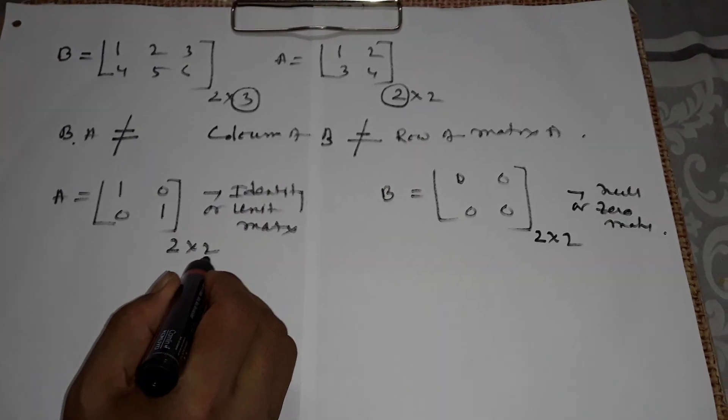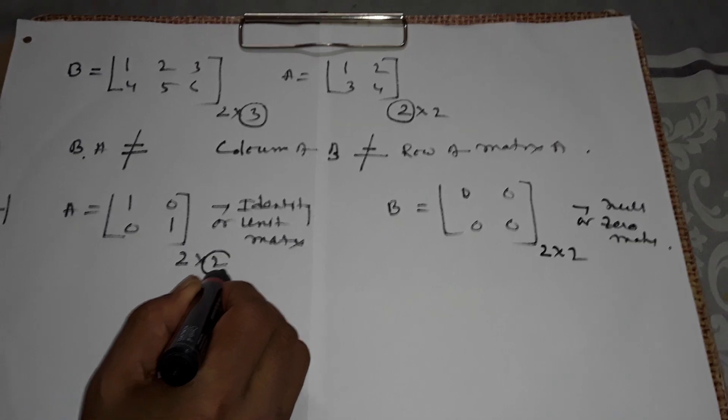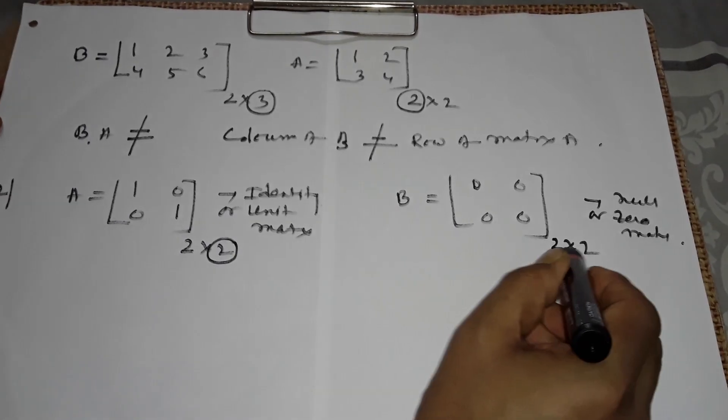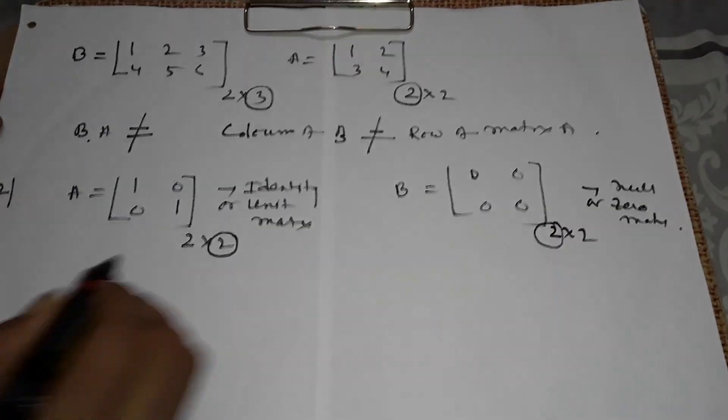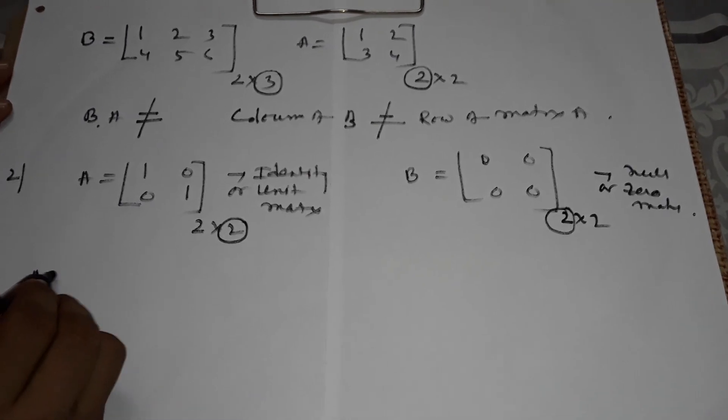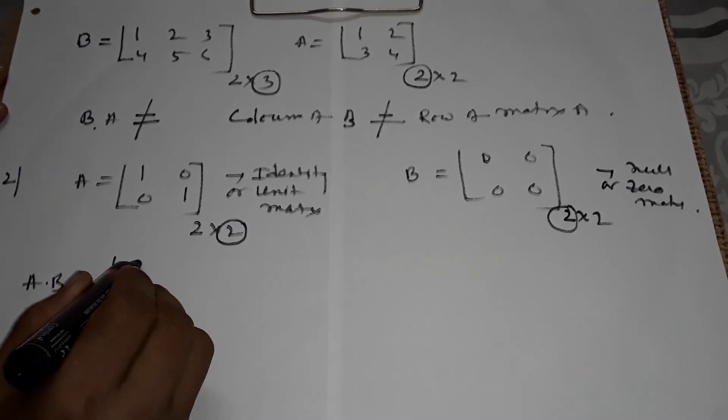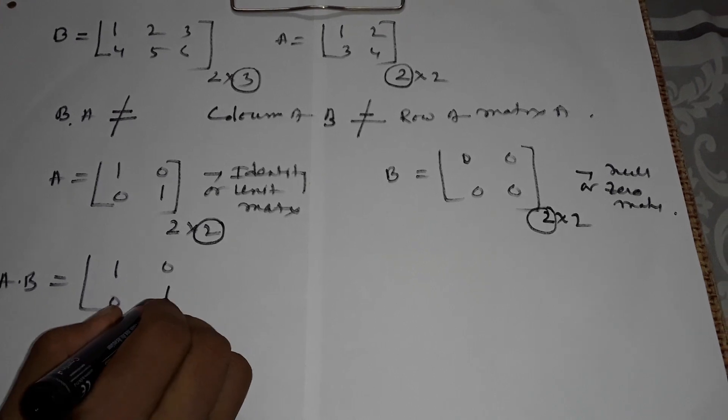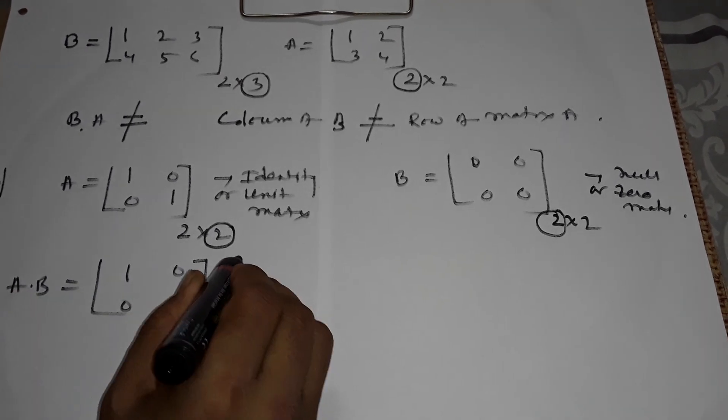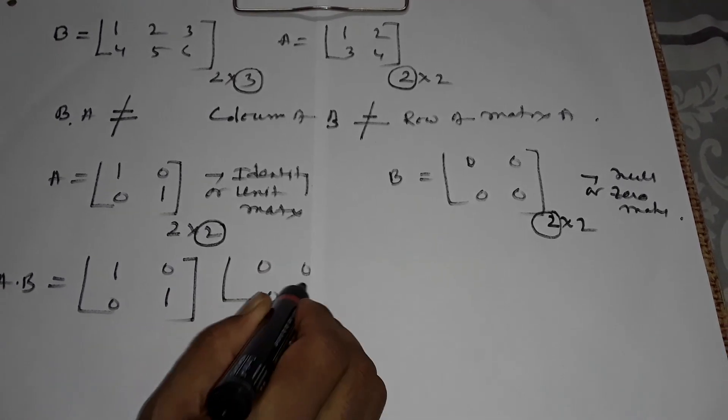Here we can find A and B because the column of A is equal to the row of B. Then we can find A and B equals 1, 0, 0, 1, 0, 0, 0, 0.